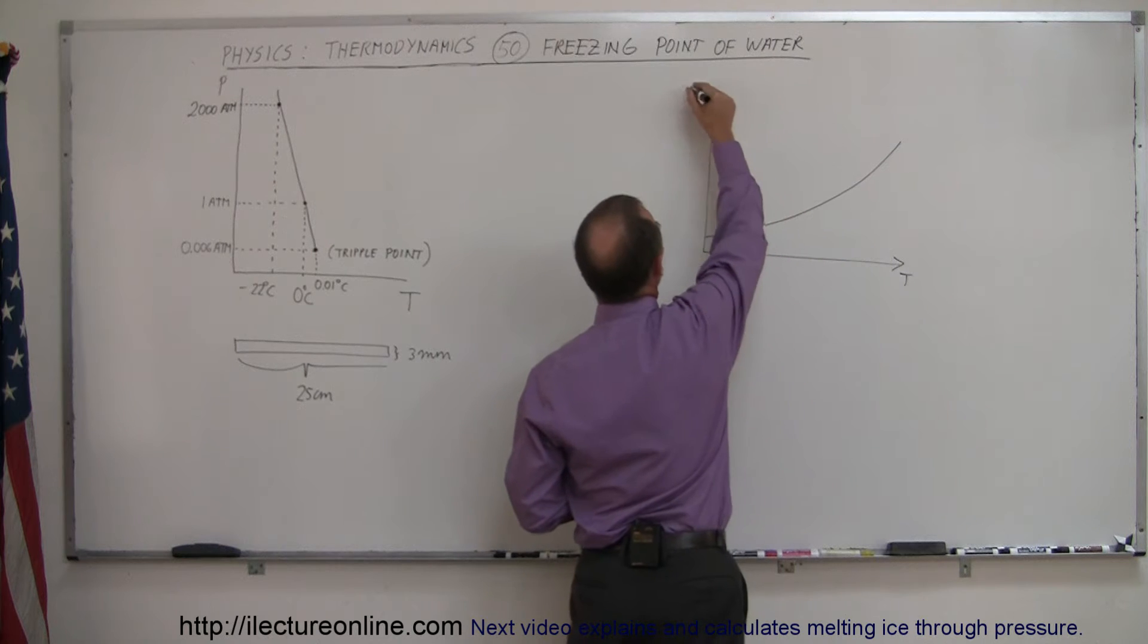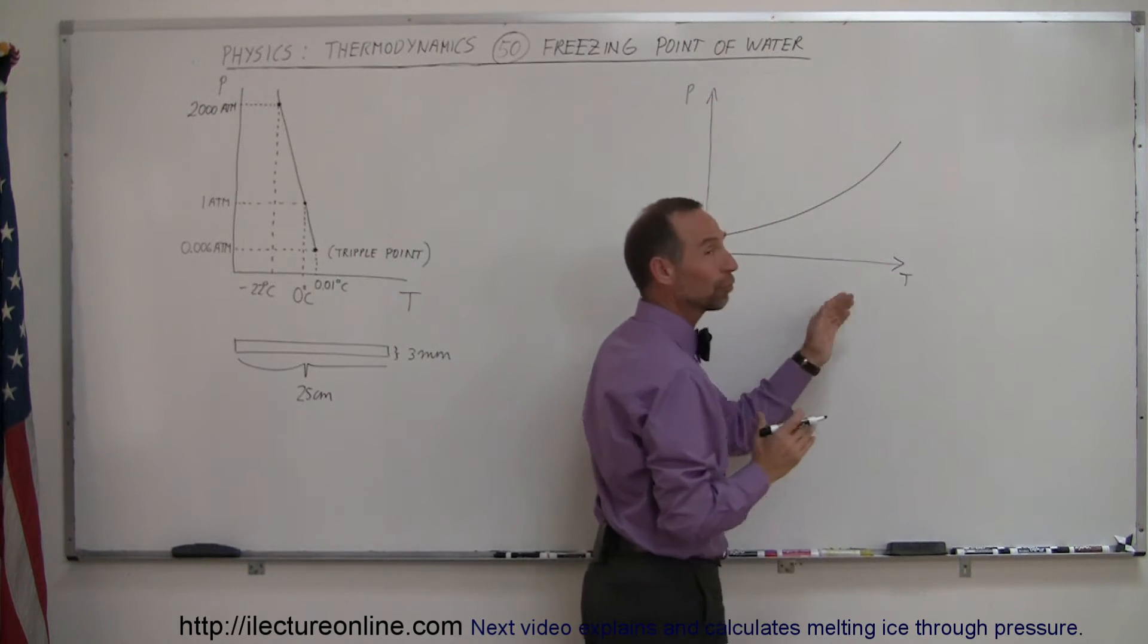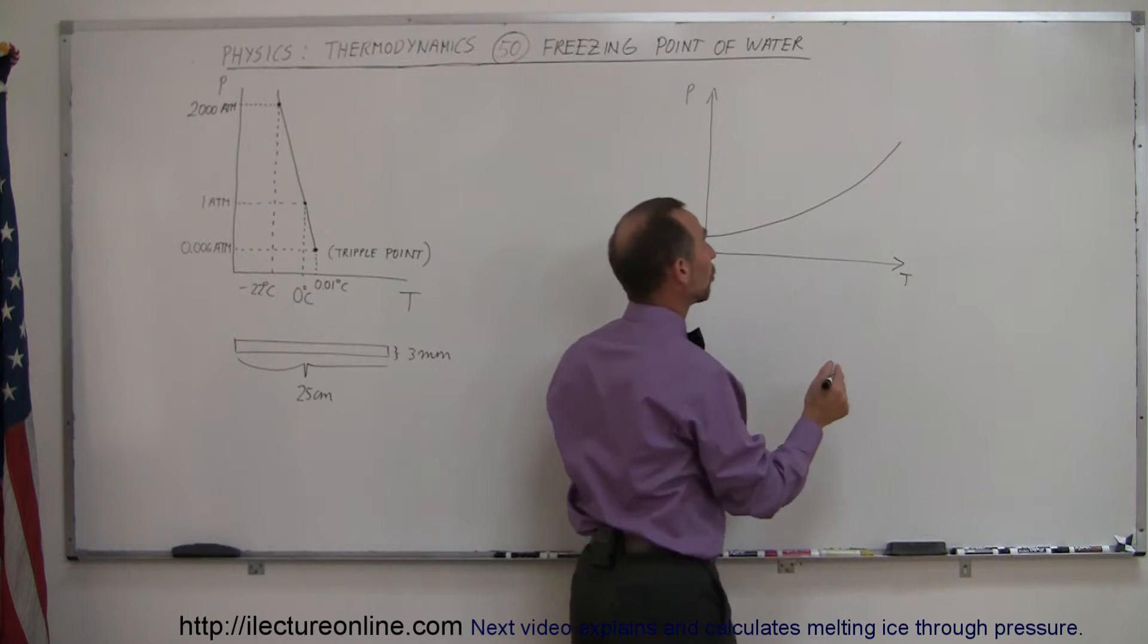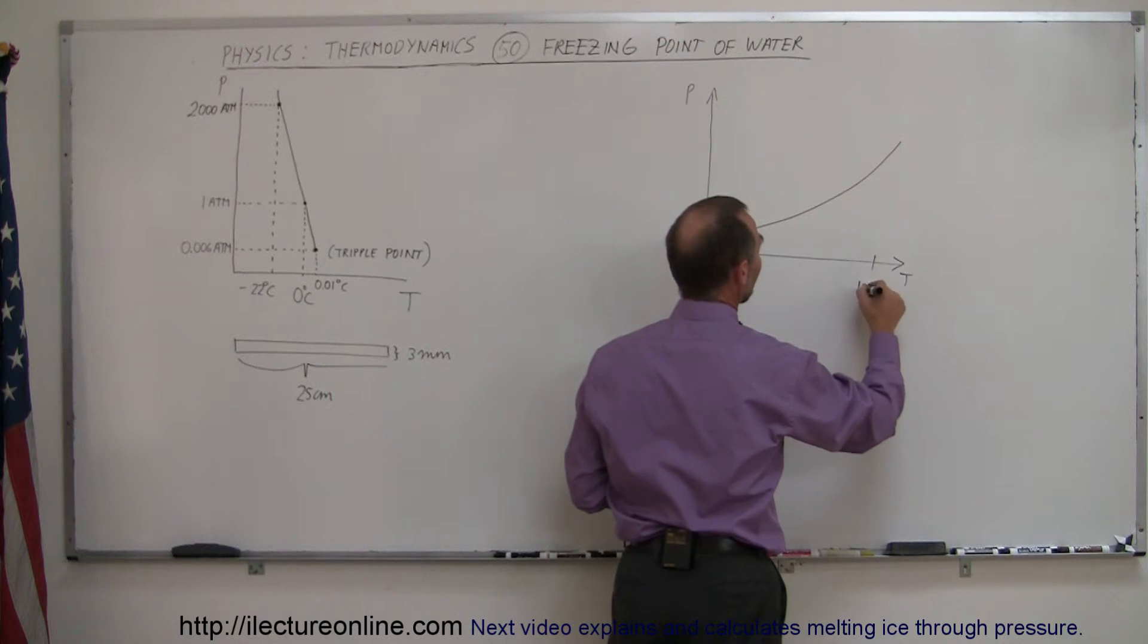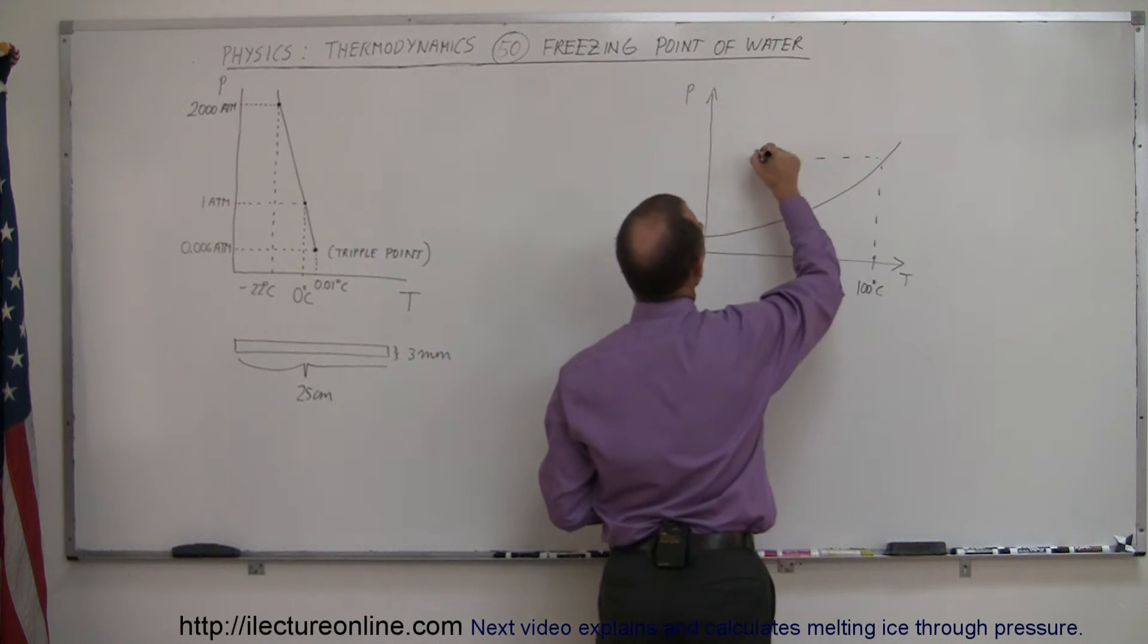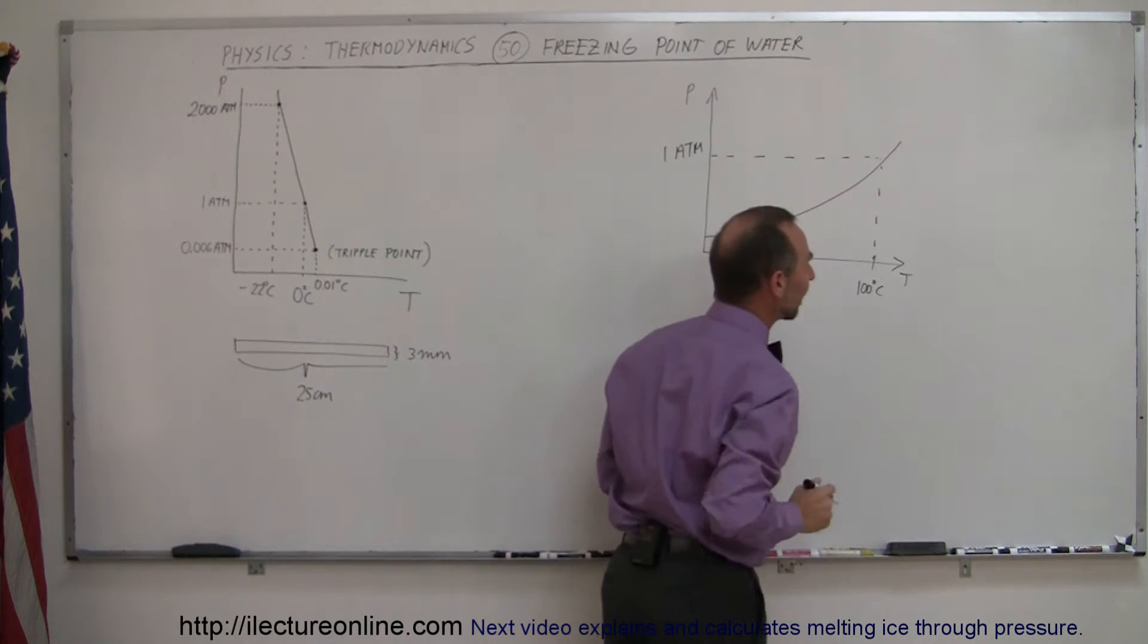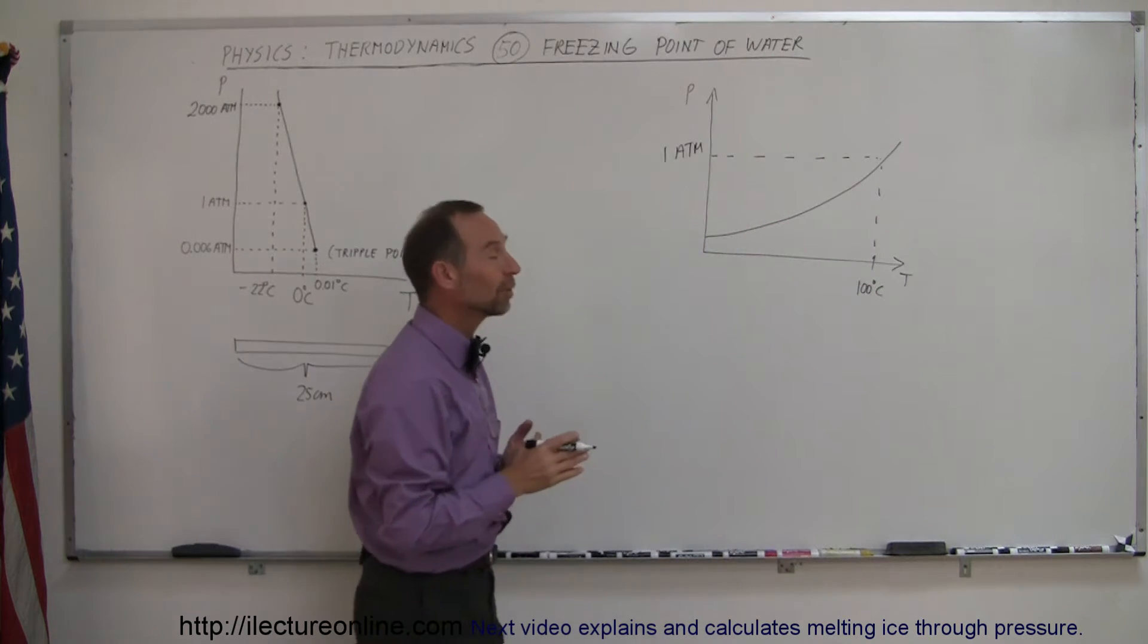This is temperature and this is pressure. You can see that as the pressure increased, the temperature for water to boil had to increase as well. And it turned out that if the pressure was one atmosphere, which is of course what we typically experience on the earth, then the boiling point had to be or the boiling temperature had to be 100 degrees centigrade.